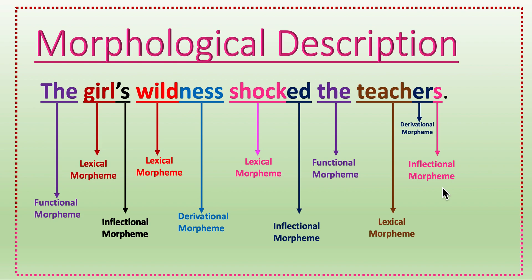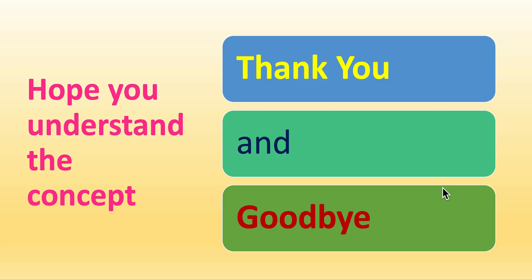So in this way we can morphologically analyze any kind of sentence. You can analyze a sentence grammatically about the parts of speech, you can analyze a sentence morphologically, and you can also analyze a sentence syntactically. Here we are talking about the morphological aspect of describing or analyzing a sentence. Hope you understand the concept. Thank you and goodbye.